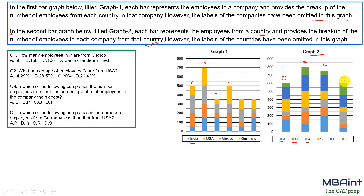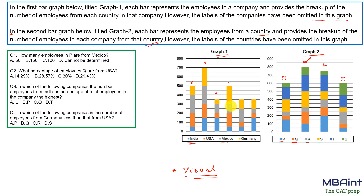To remove ambiguity, we use visual observation. Looking at Graph One, Mexico (gray color) visually has the maximum number of employees. Summing Mexico across all companies: 200, 200 (400), 100 (500), 600, 150 (750), and 50 — that makes 800. In Graph Two, there is exactly one bar with 800, so that is definitely Mexico.